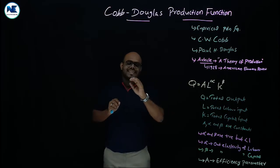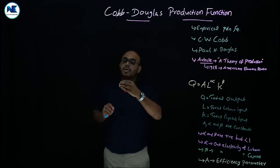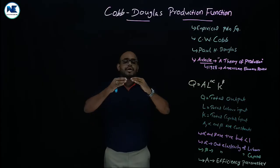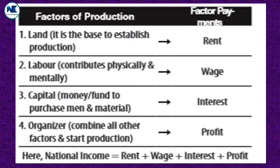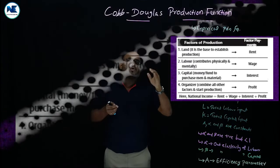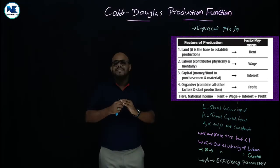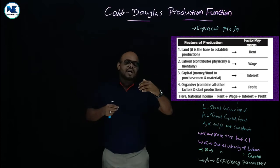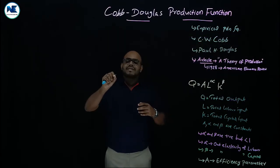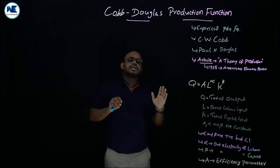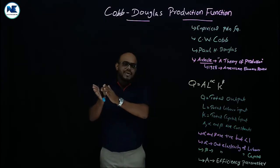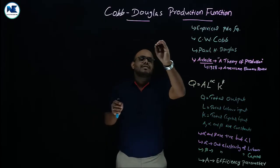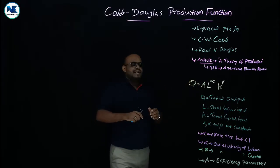Production is the transformation of inputs or raw materials into output — the combined efforts of the four factors of production: land, labor, capital, and entrepreneurship — resulting in transformation of input into output. A production function is the technical relationship between physical input and physical output.